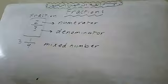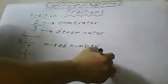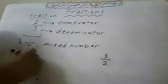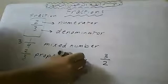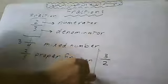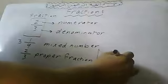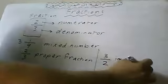Fractions have two types. For example, two over three — the numerator two is less than the denominator three, so it is called a proper fraction. But three over two — the numerator three is greater than the denominator two — it is called an improper fraction.